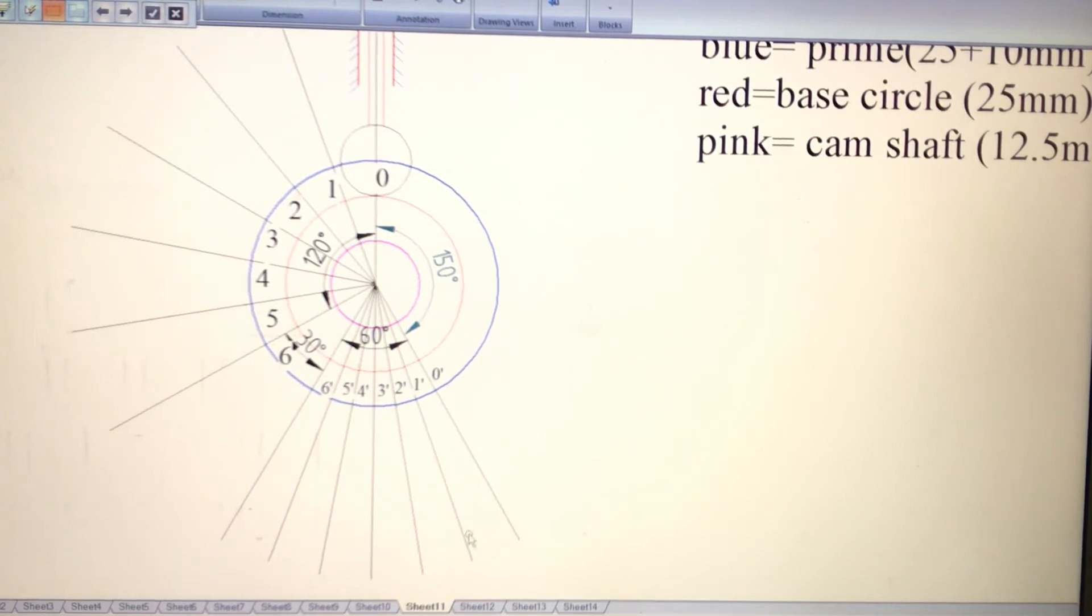Likewise, divide this 60-degree angle of return into six equal parts, that is 10 degrees each. Project a line from each point, so you get points on the prime circle: 0, 1, 2, 3, 4, 5, 6. For the angle of return in reverse order: 6 dash, 5 dash, 4 dash, 3 dash, 2 dash, 1 dash, 0 dash.